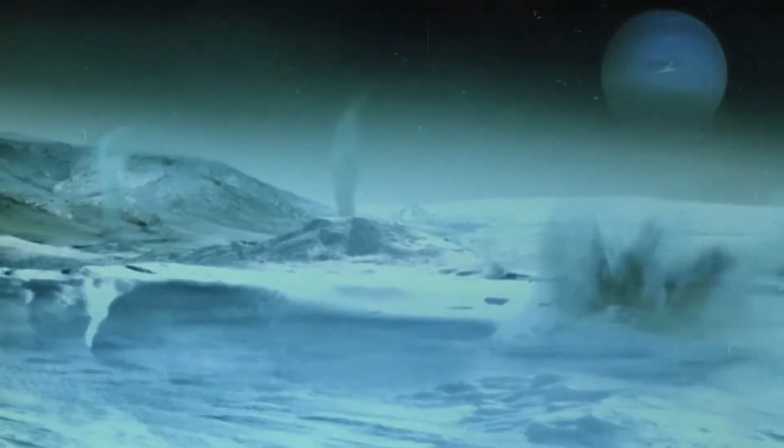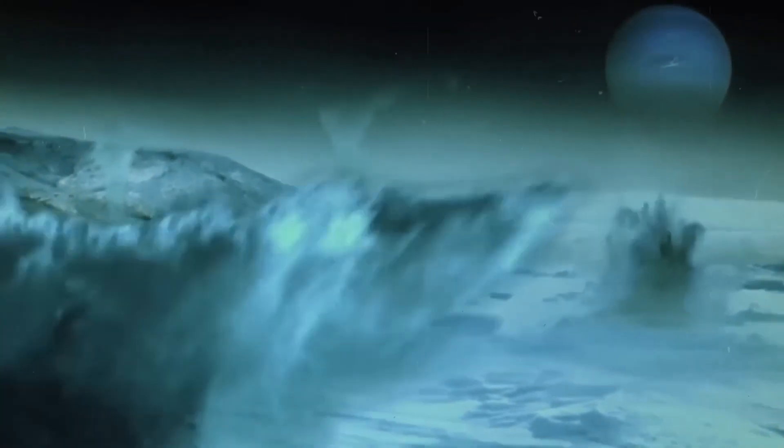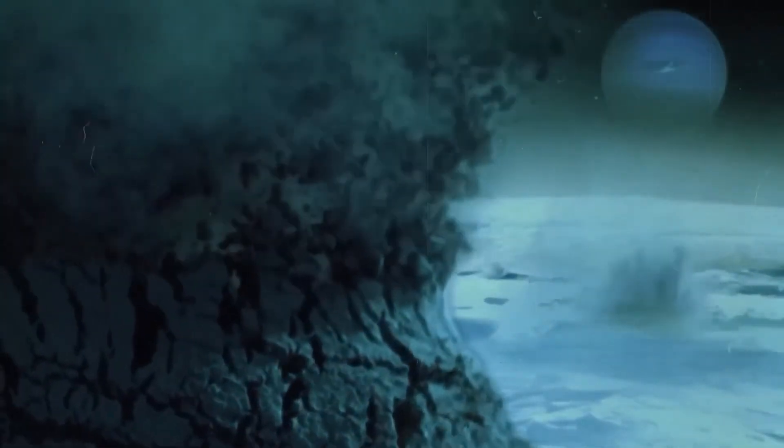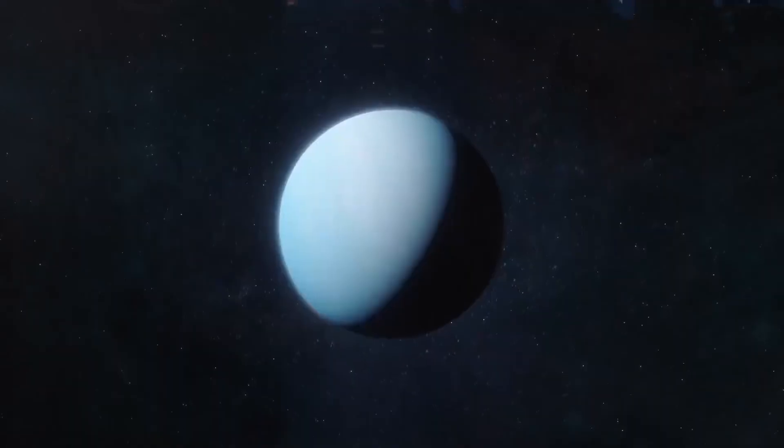Toxic and corrosive atmosphere: the composition of Neptune's atmosphere includes gases such as methane and ammonia. These gases are toxic to humans and can be corrosive as well. Inhaling or being exposed to these gases would have harmful effects on the human body.